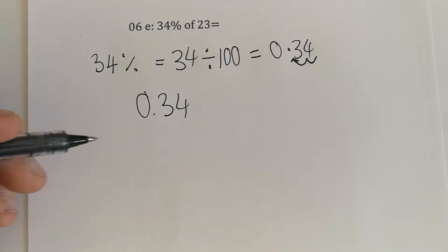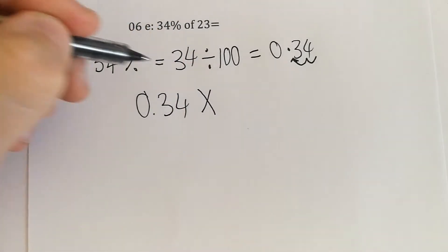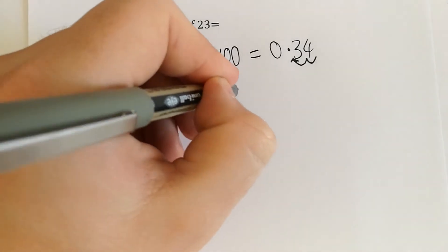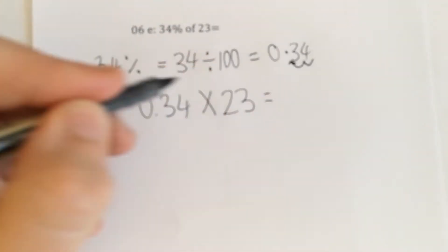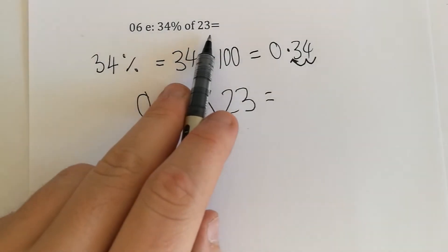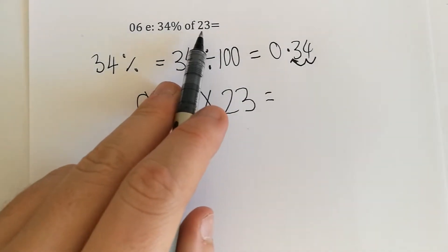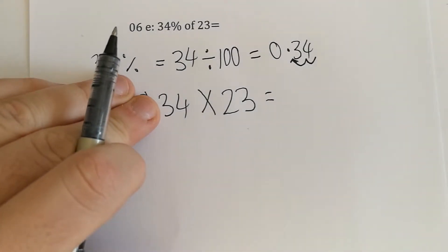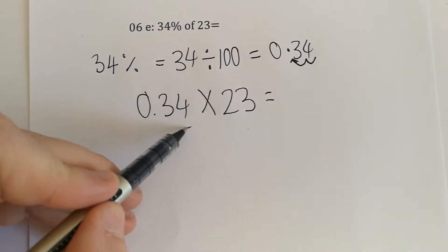So 0.34 times 23 is 34% of 23, and we can just work that out. We'll remember that we can treat this as 34, but for our final answer we have to move our decimal point.